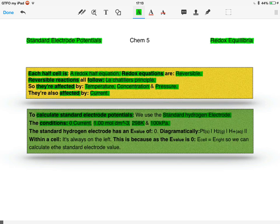The standard hydrogen electrode is given an E value of zero, zero volts, because it's an EMF.